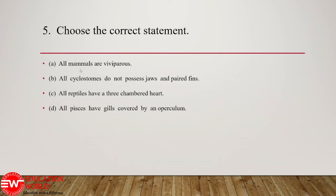Question number 5: choose the correct statement. Option A: all mammals are viviparous; option B: all cyclostomes do not possess jaws and paired fins; option C: all reptiles have a three-chambered heart; option D: all pisces have gills covered by an operculum. If we analyze the options — all mammals are viviparous is incorrect because some mammals are egg-laying. These egg-laying mammals are technically known as prototherians. So prototherians are not viviparous; they are oviparous as they lay eggs. Hence the first statement is incorrect.